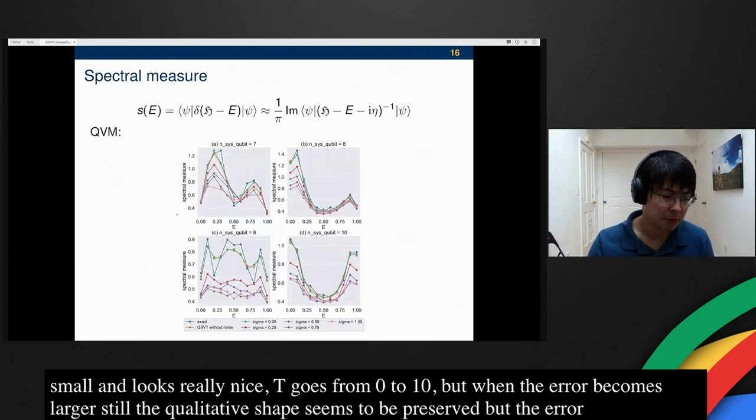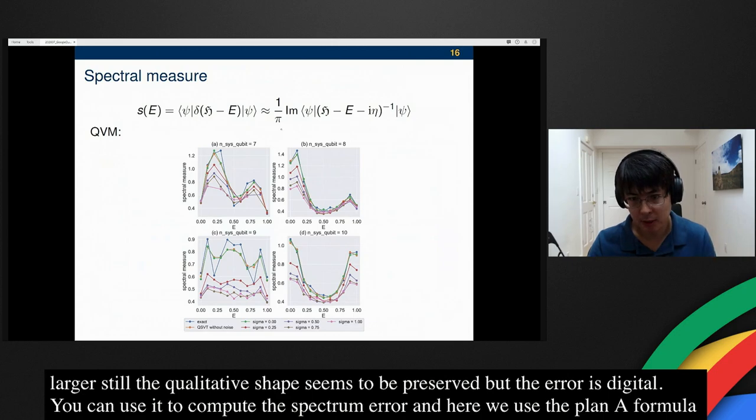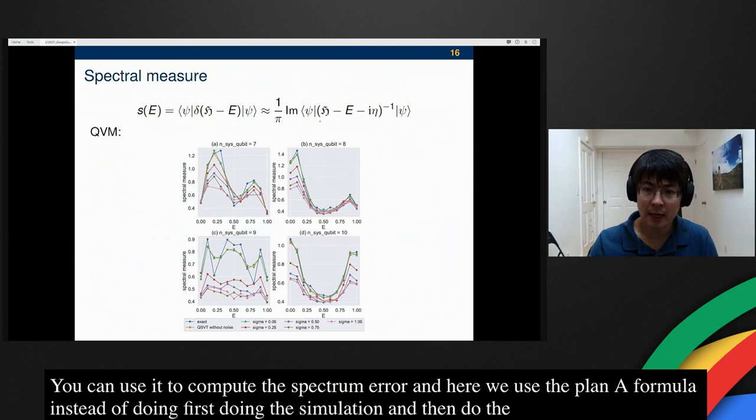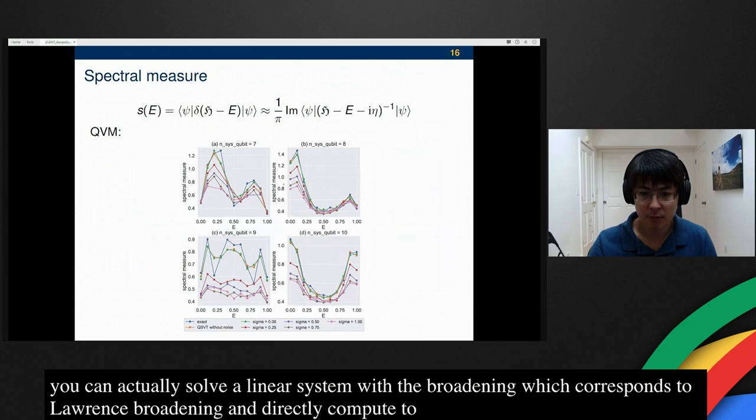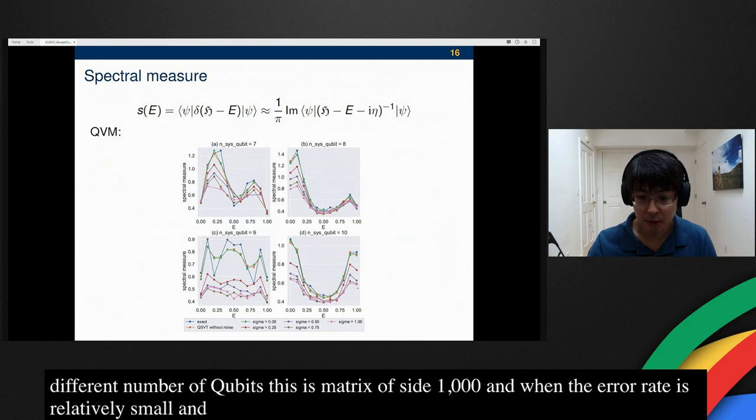You can use it to compute the spectrometer. Here we use the Plemelj formula. Instead of first doing the Hamiltonian simulation, and then you do the inverse Fourier transform, you can actually solve a linear system with the broadening, which corresponds to a Lorentzian broadening, and directly compute this. Again, you can see that for different number of qubits, this is like a matrix of size about 1,000, and when the error rate is relatively small, at least the qualitative features is preserved very well.